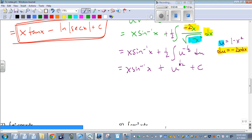And then we need to finalize our answer by putting it in terms of x, so we don't want this left as u. We get x times inverse sine of x plus square root of 1 minus x squared plus c.